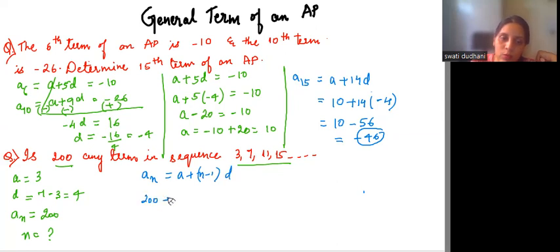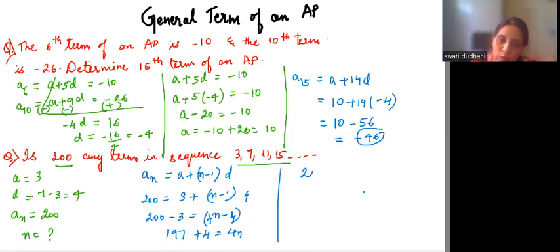An equals 200 equals 3 plus n minus 1 into 4. So 200 minus 3 equals n minus 1. We can open the brackets. 4 into n is 4n and 4 into 1 is 4. So 197. Now minus 4 when I transpose it becomes plus 4 equals 4n. So here we get 201 equals 4n or n equals 201 by 4. So it cannot be divisible.